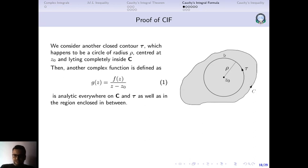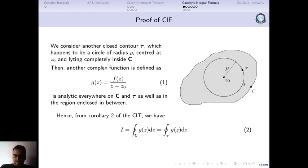So g(z) is analytic at all points except z₀, because z₀ is the singularity. This means g(z) is analytic in the region which lies between c and tau. By the second corollary of the Cauchy integral theorem, the closed loop integral of g over the outer loop c will be equal to the closed loop integral of the same function g over the inner loop tau. So the integral over c must equal the integral over tau.